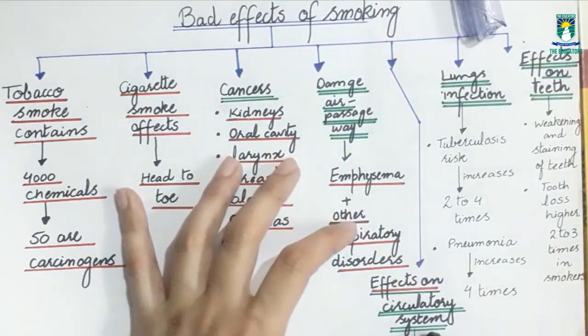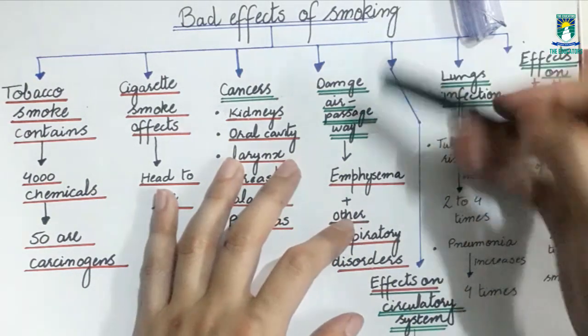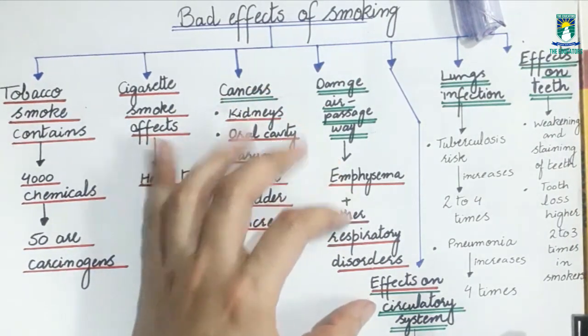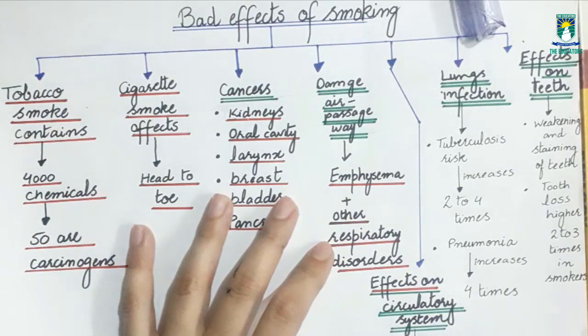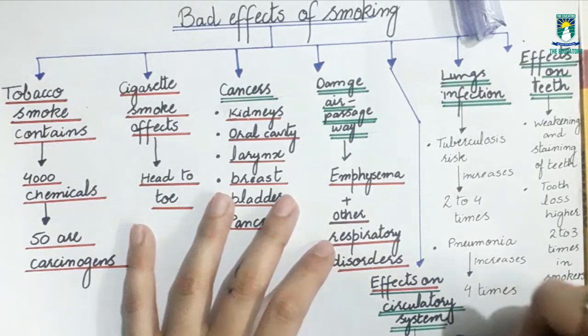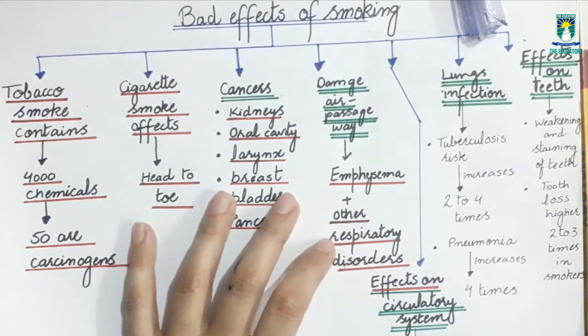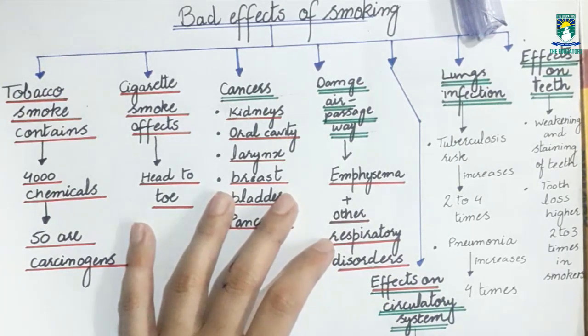Now we will discuss the effects of smoking on circulatory system. Smoking also has effects on the circulatory system. The carbon monoxide present in tobacco smoke lessens oxygen carrying capacity of hemoglobin. This is the hemoglobin present in your red blood cells, the protein that binds oxygen. It lessens its oxygen carrying capacity.